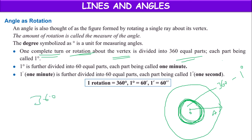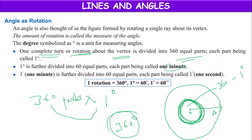We are making one complete rotation into 360 equal parts, and each part has a value of 1 degree. So altogether, one complete turn has a value of 360 × 1 = 360 degrees. So 360 degrees is the measurement of one complete rotation, and this is called the complete angle.